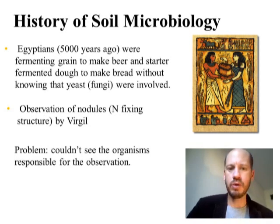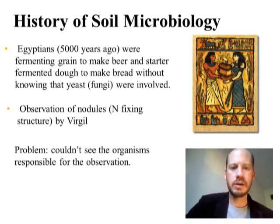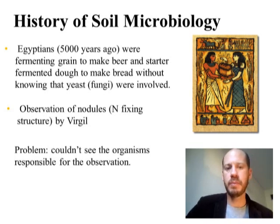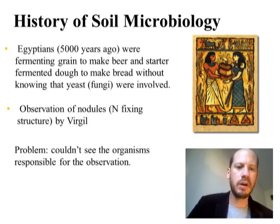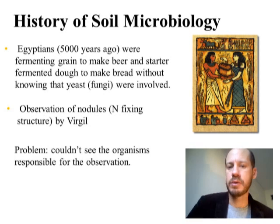Humans have been using microbes for quite a long while, but without even knowing it. Egyptians were using microbes — yeasts in particular — to ferment beer, and they were using fermented dough as a starter for making new bread. This type of biotechnology could not be attributed to microbes because they didn't know such things existed. We also have observations of root nodules by Vigio in the Roman era, but he also couldn't attribute that to microbes because they were too small to be observed.